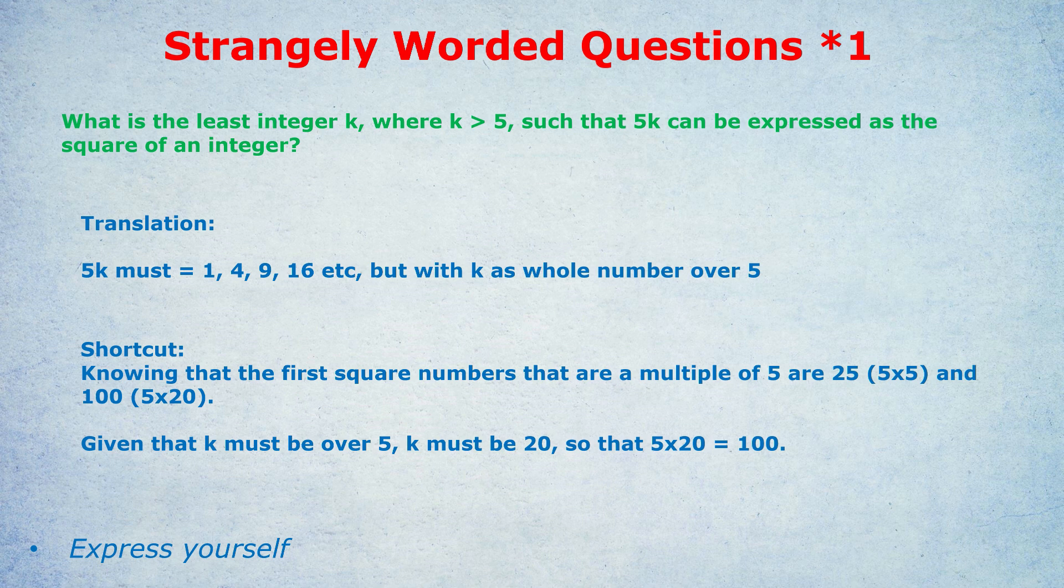So we move on to the next one. The next square number that was a multiple of 5 is 100. So k must be 20. 5 times 20 is 100. And 100 of course can be expressed as a square of an integer.